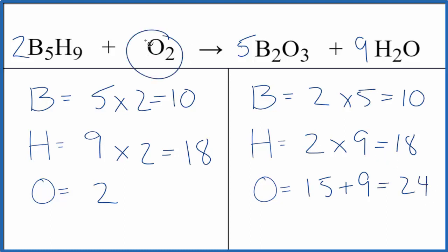But again, this oxygen is all by itself. If we put a twelve here, two times twelve, that gets twenty-four. And we're done. This equation is balanced.